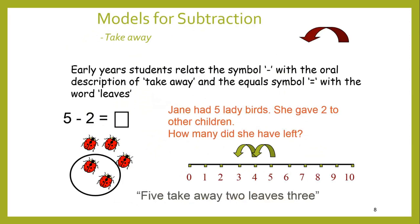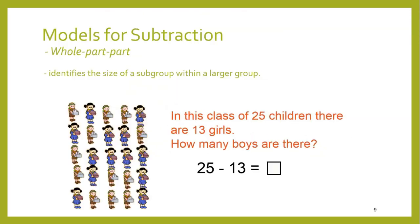Early-year students relate the minus symbol with the oral description 'take away' and the equals symbol with the word 'leaves': five take away two leaves three. A number line is invaluable for modelling subtraction. Another model we can use is whole-part-part: we've got 25 children as the whole lot; part of these are 13 girls, the other part is 12 boys — 25 take away 13 leaves 12.